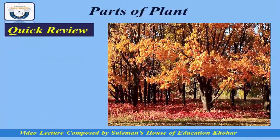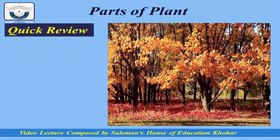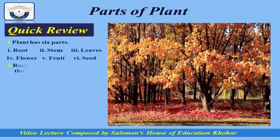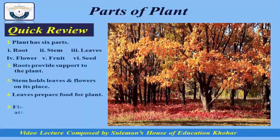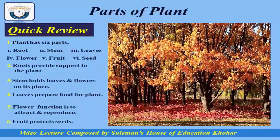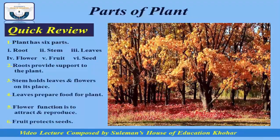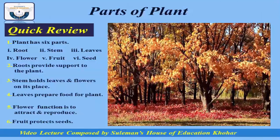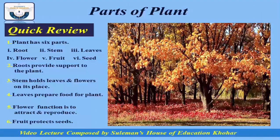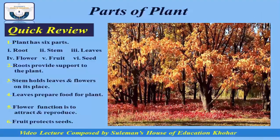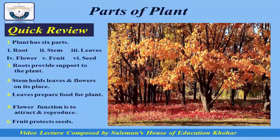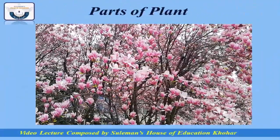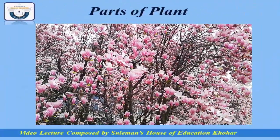Let's have a quick review. A plant has six parts: root, stem, leaves, flower, fruit, and seeds. The root provides support to the plant. The stem holds leaves, flowers, and fruits in place. Leaves prepare food for the plant. The flower's function is to attract and reproduce. The fruit protects the seeds.